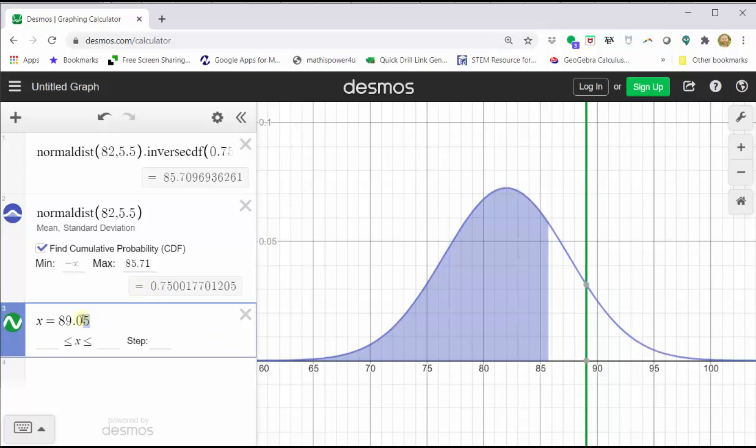In cell three, we can change the equation to x equals 85.71 to see the exact test score on the graph of the distribution. Let's go ahead and record this test score as well.